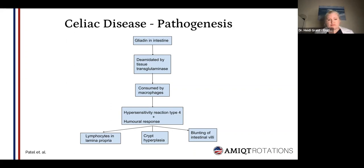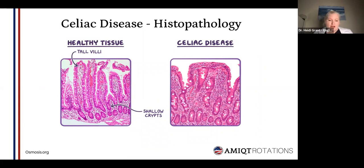So you can see here in terms of histopathology — here on the left you can see the tall villi, you can see shallow crypts, and then you can see a minimal number of lymphocytes. But if we look to the right, with celiac disease, you can see that blunting of the tall villi — they've shrunk in size — you see the hyperplasia of the crypts, and you see a lot more lymphocytes.